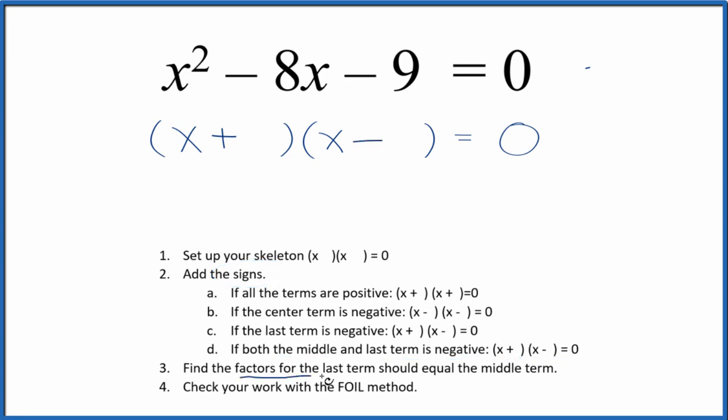Then we can find the factors for that last term, the 9, and they should add up to the middle term, the 8. So if we write the factors for 9, we have 1 times 9 and 3 times 3. And I can see the difference between 1 and 9. That's 8.